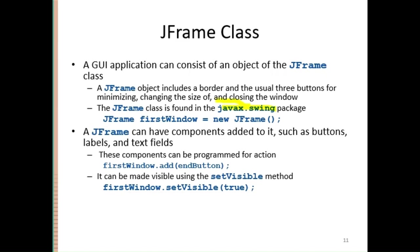JFrame is the class through which you can provide the window at runtime, through which the user can interact with your application. If you want to use the JFrame class, you can define an object of this class. There are a number of constructors — there is a default constructor, and if you want to give a title, you can use the parameterized constructor. After defining the object of JFrame, you can put components on it — components could be text boxes, labels, or text fields.